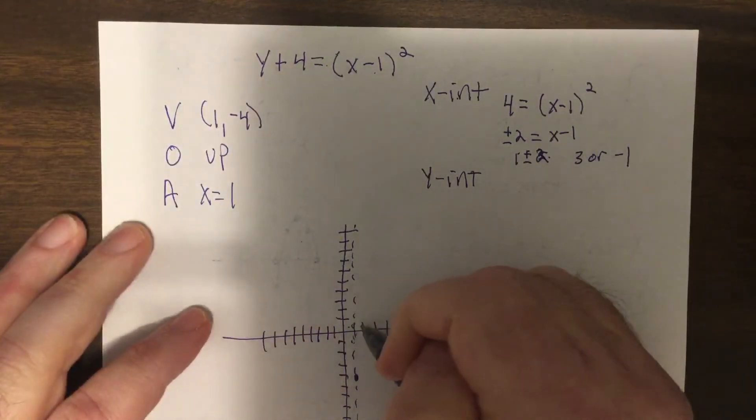So it'd be one plus two is three or one minus two is negative one. So three, one, two, three, negative one. Oh, they're two units away.